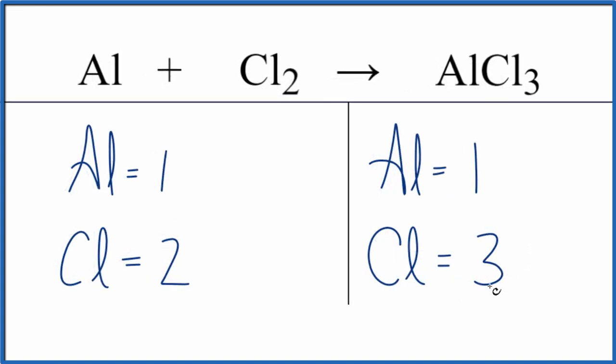We have an odd and even number. The easiest thing to do is multiply this by two because then we'd have even numbers we could fix. So I'm going to put a coefficient of two in front of the aluminum chloride. And remember, the two goes to everything, so three times two gives us six.